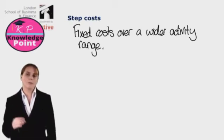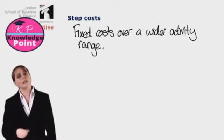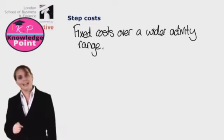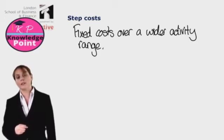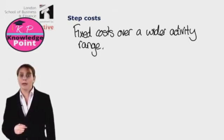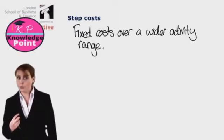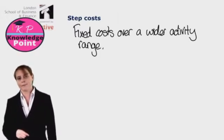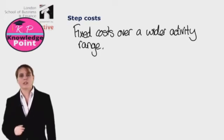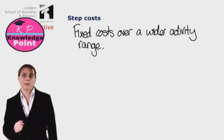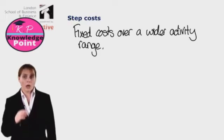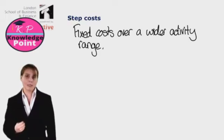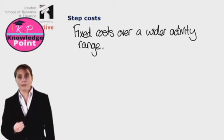But what if our company grows and our sales demand increases, and we get to the point where we want to produce more than a thousand units of our product per day? Maybe we want to double our production and produce two thousand units per day. Will our rent cost still stay the same? Well, on our existing factory the rent will stay the same. However, if we want to double our production, our existing factory only has the capacity to produce a thousand units per day.